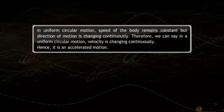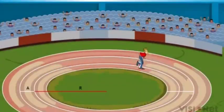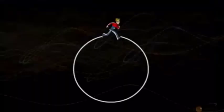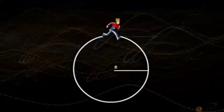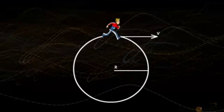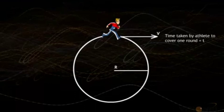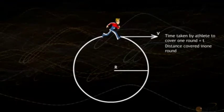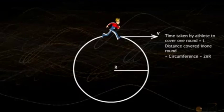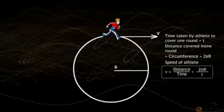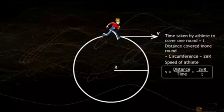In uniform circular motion, speed of the body remains constant but direction of motion is changing continuously. Therefore, velocity is changing continuously, making it an accelerated motion. Consider an athlete moving along a circular track of radius r. The direction of velocity at any point a is along the tangent to the circle at that point. Time taken to cover one round is t, distance covered is 2πr, so speed V equals 2πr divided by t.